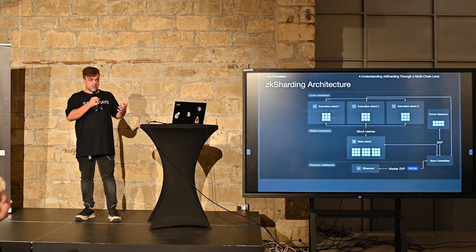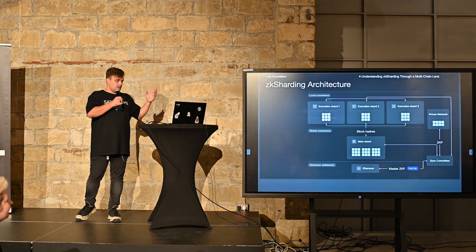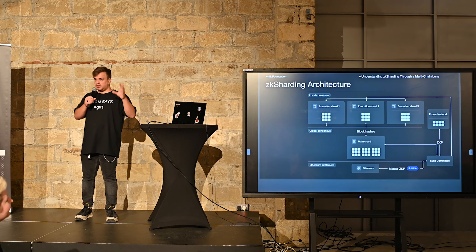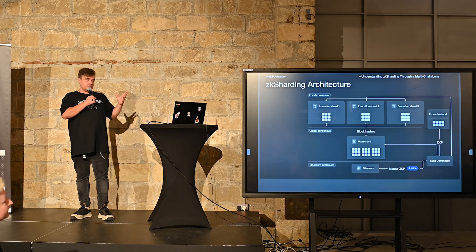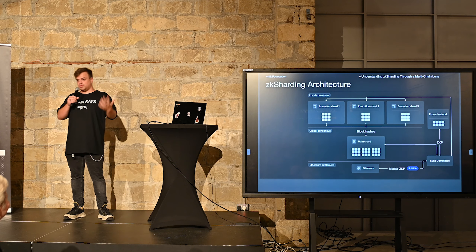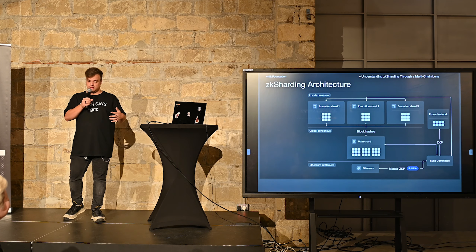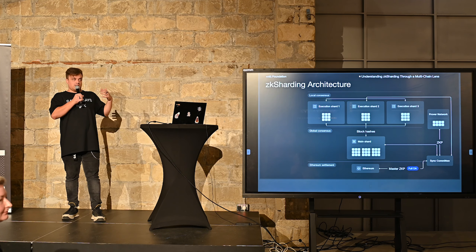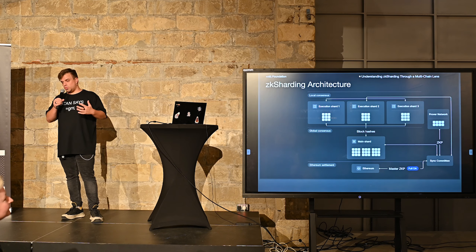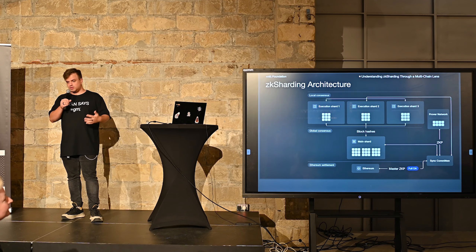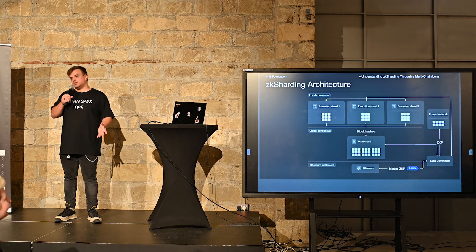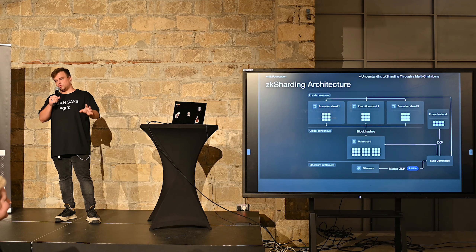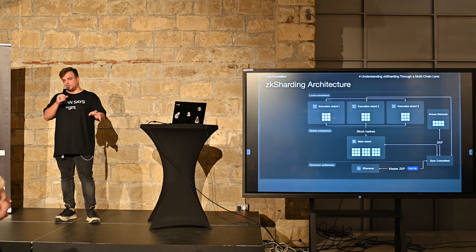We came up with some classification. We defined four main properties. The first one is chain creation — how a chain can be created. The second is cross-shard messaging, basically close to the interoperability definition but a bit different. Third is interchain structure — how your chains are connected to each other. The last one is fee model — how do you pay for transactions?